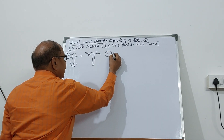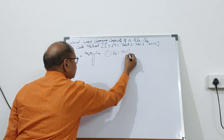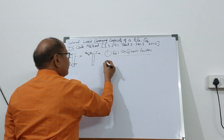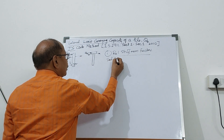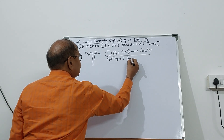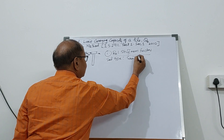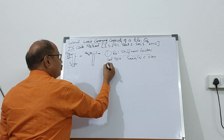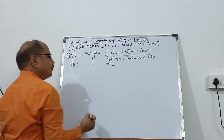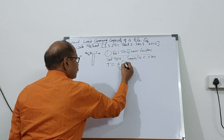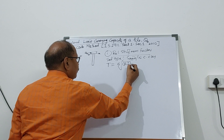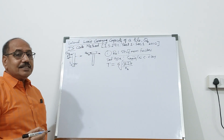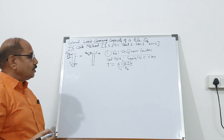First of all, you will have to find out the relative stiffness factor. To find out this relative stiffness factor, the soil type is important. If it is a sandy bed or normally consolidated clay, then find out the relative stiffness factor T, equal to the fifth root of the flexural rigidity of the pile divided by the horizontal subgrade modulus of the soil mass, that is, n_h.